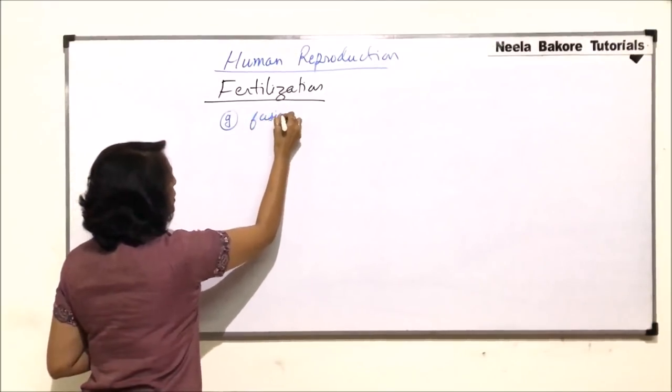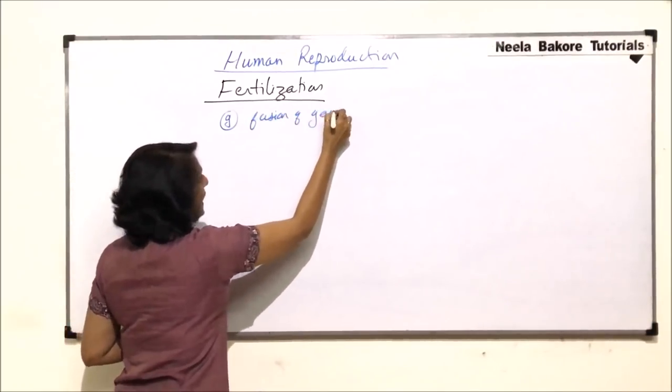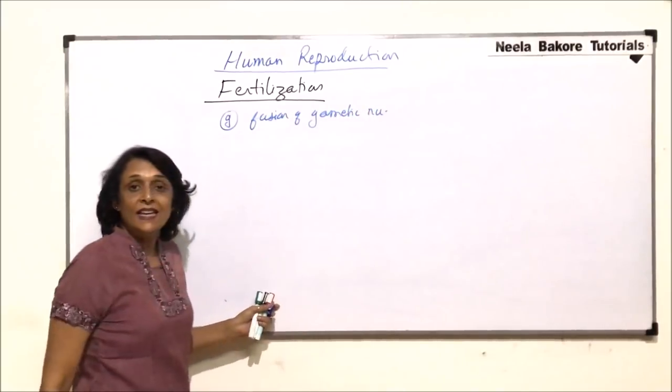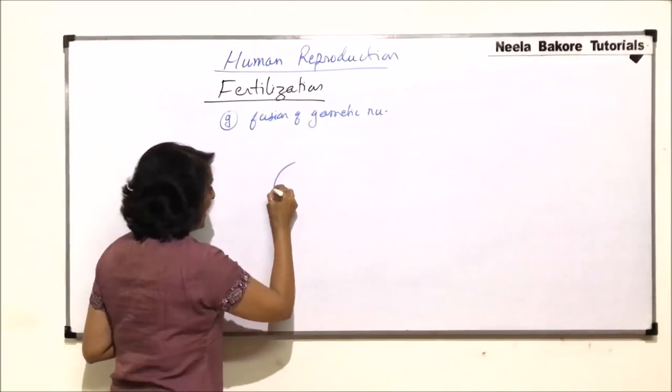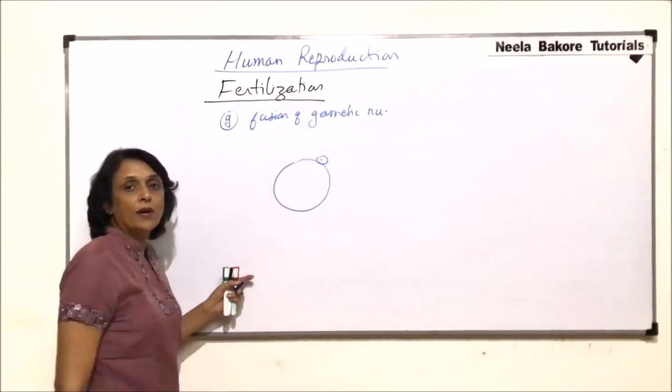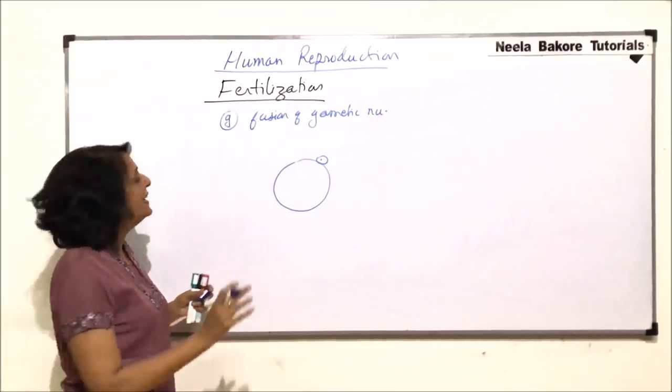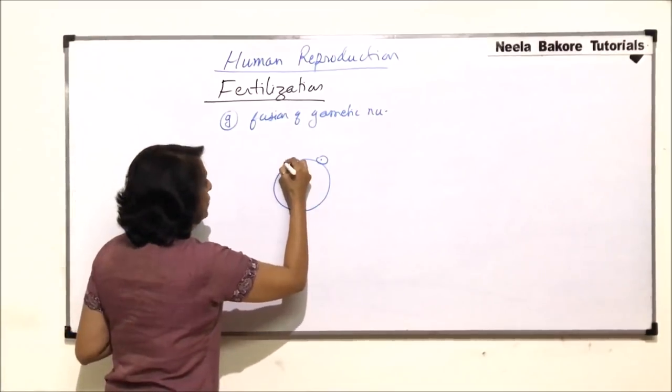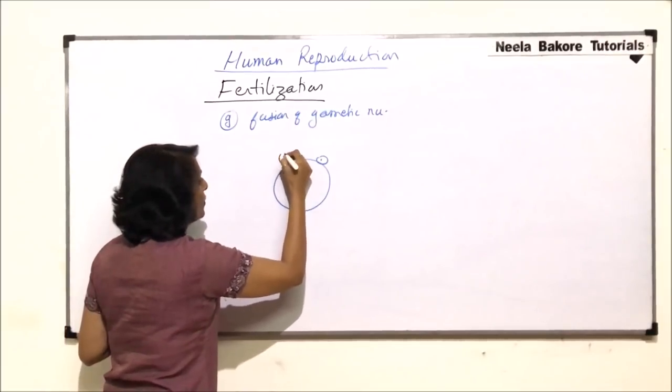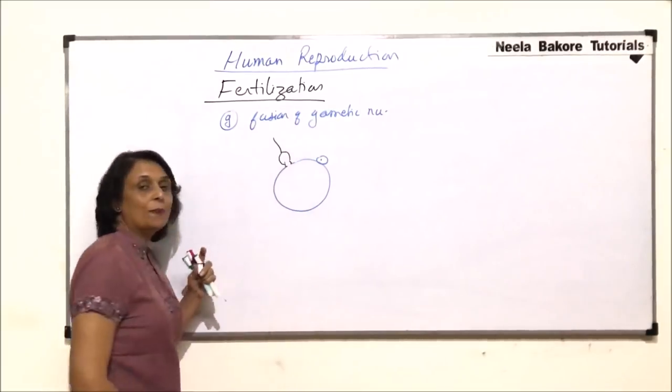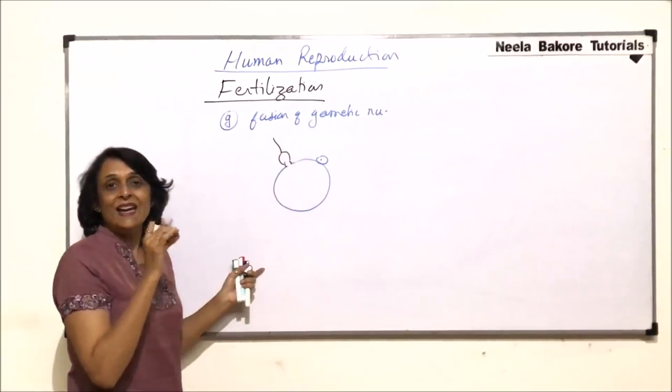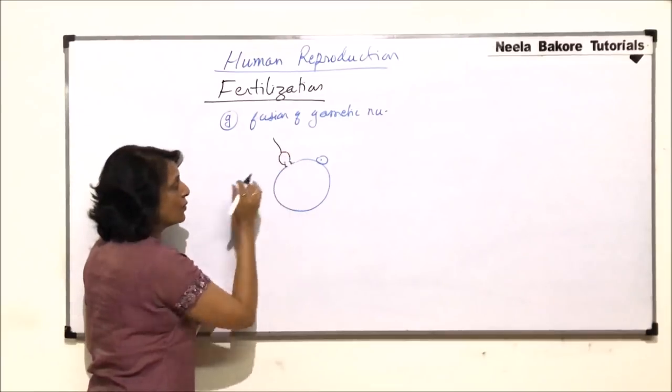So this is fusion of gametic nuclei. We have seen that now the egg is formed and there is a tiny polar body which will degenerate later on. The sperm has fused through its acrosome and the other part is outside. So now the nucleus will be coming in.